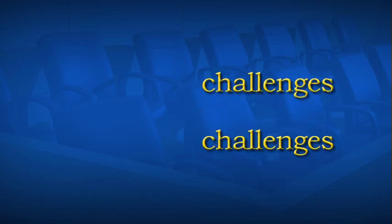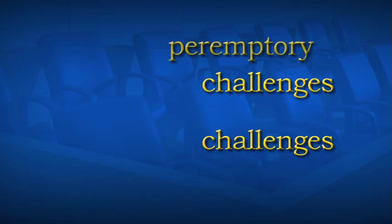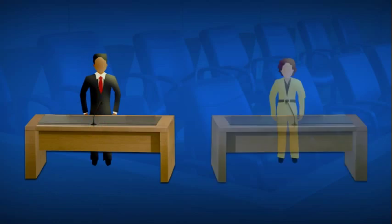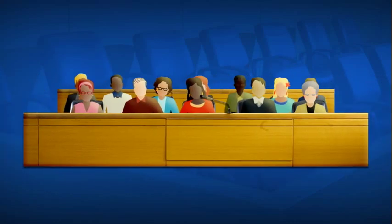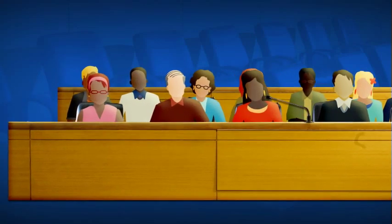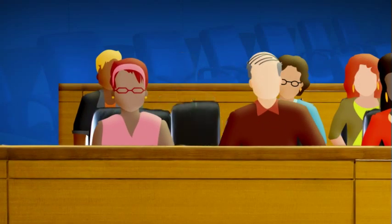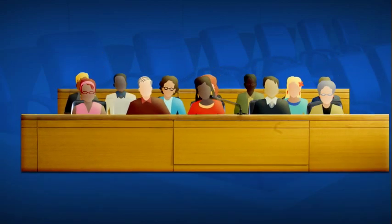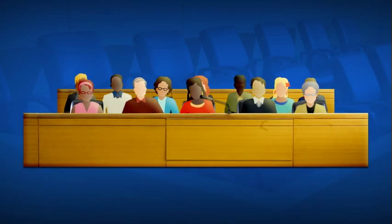Basically, there are two types of challenges: peremptory challenges and challenges for cause. Each side gets a certain number of peremptory challenges, which allow that side to dismiss a potential juror without explanation, though the Supreme Court has said jurors cannot be dismissed because of race, ethnicity, or gender.